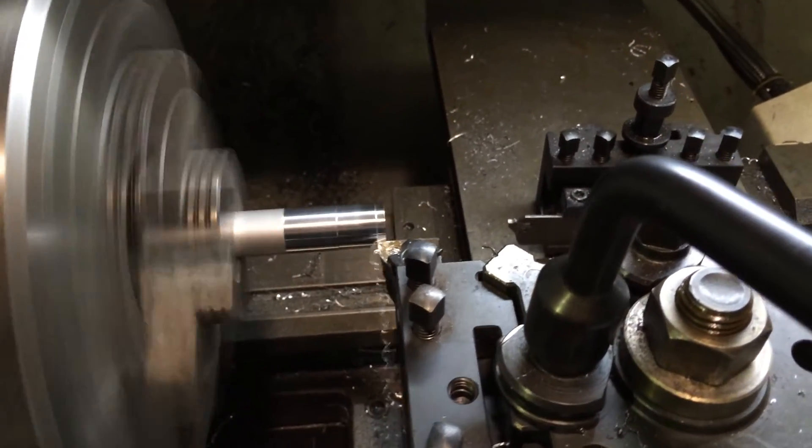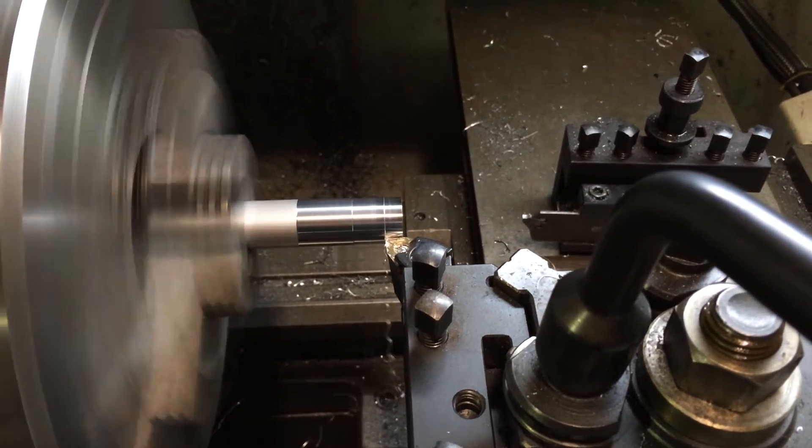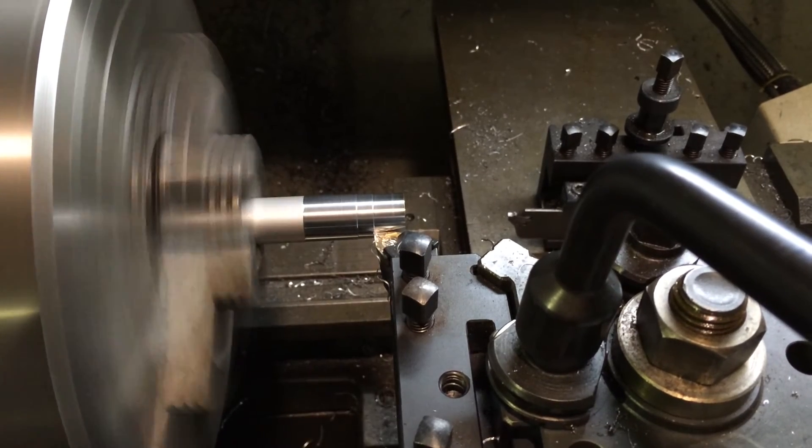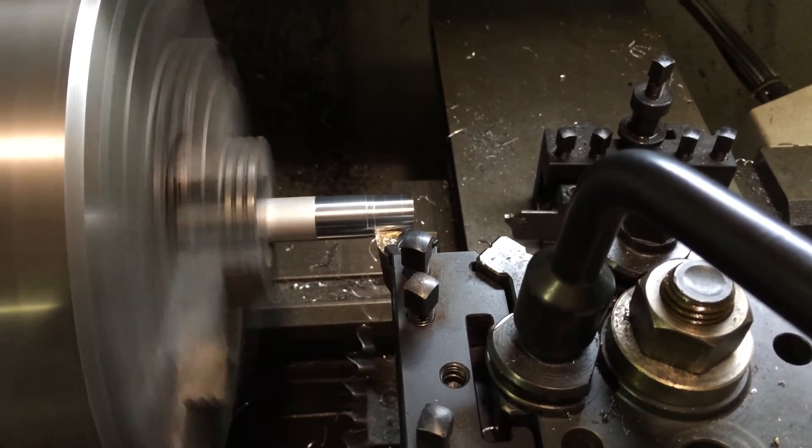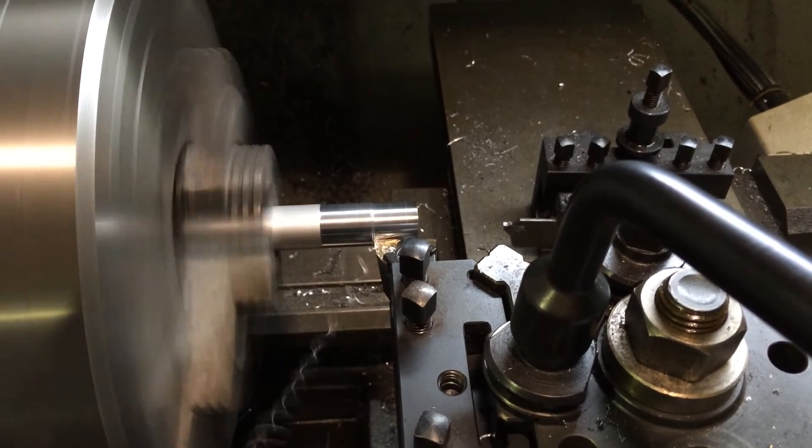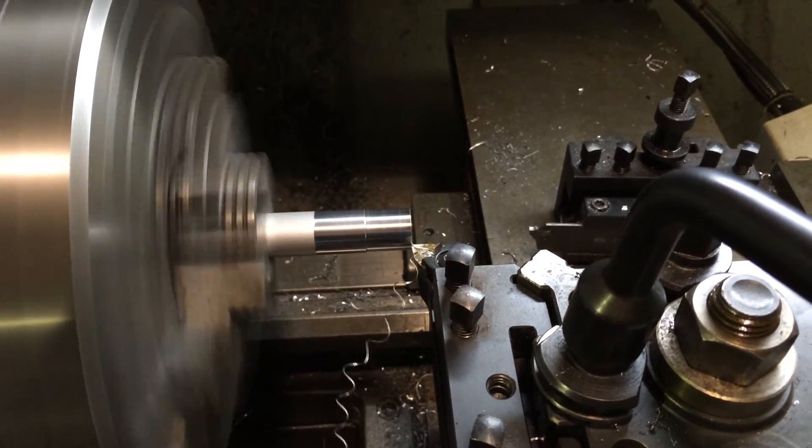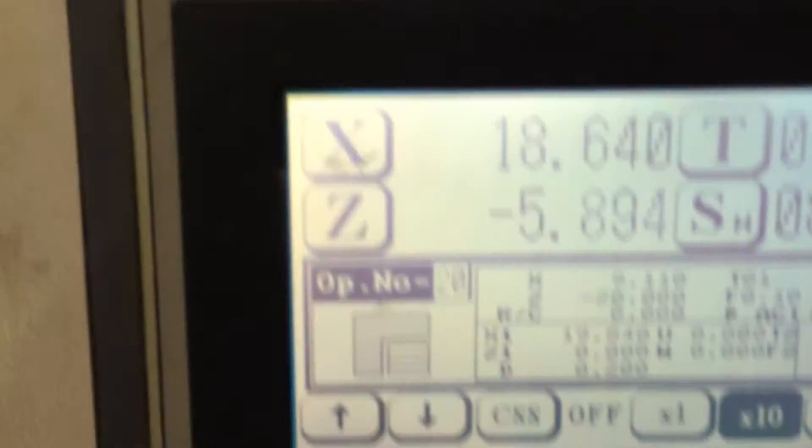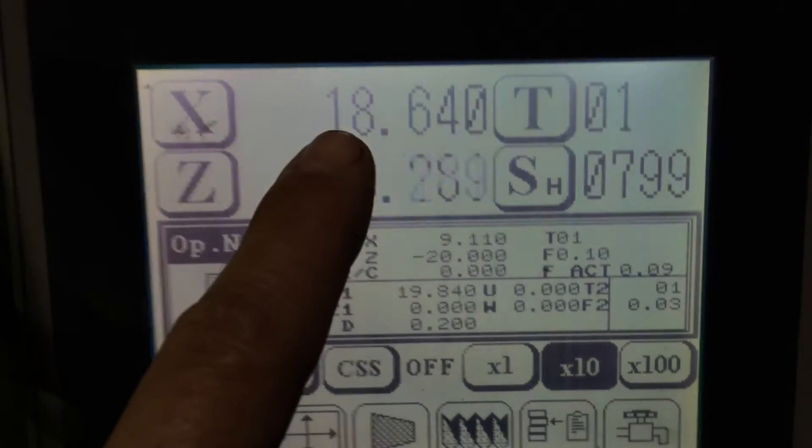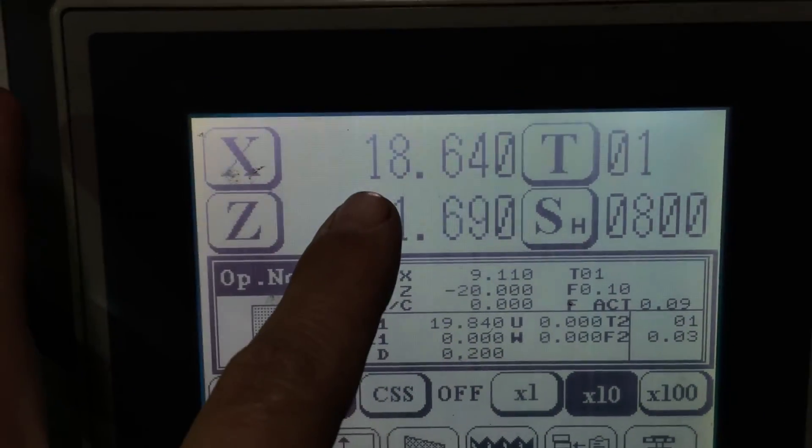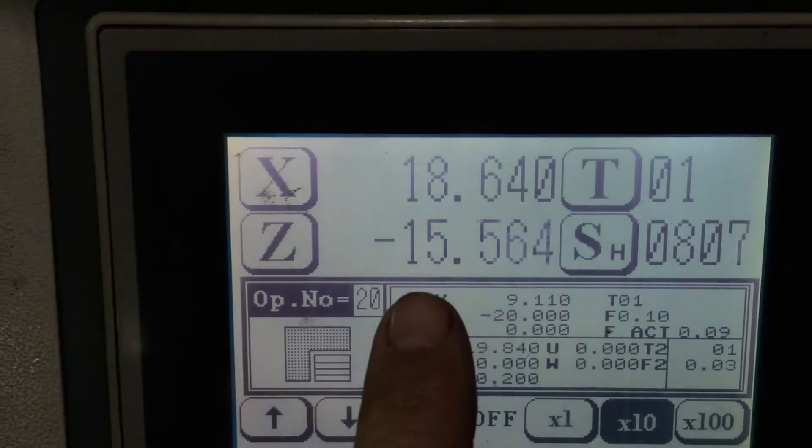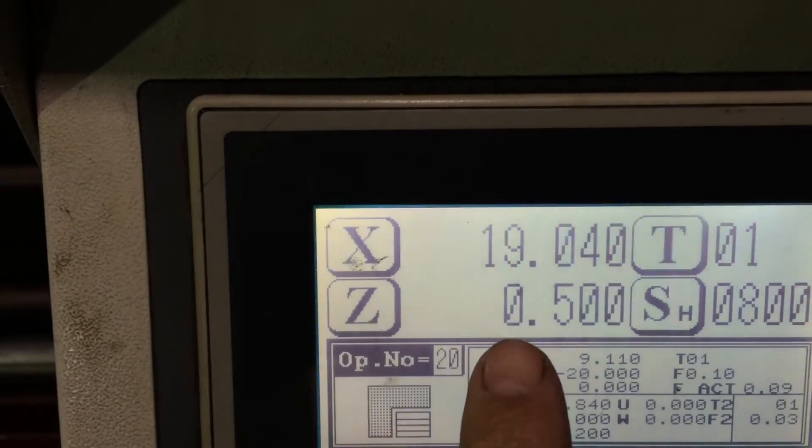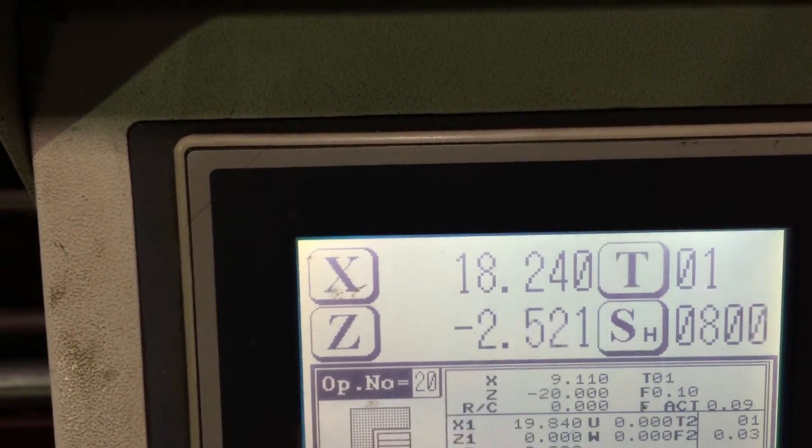There we go. And we can watch what's happening here. So our current diameter on this cut is 18.64mm. You can see the Z axis working its way to 20 millimeters and back to zero and so on.